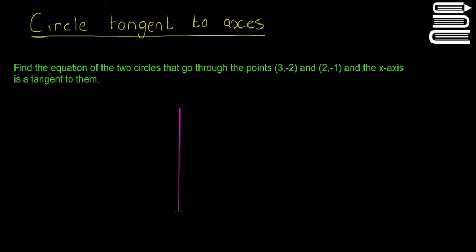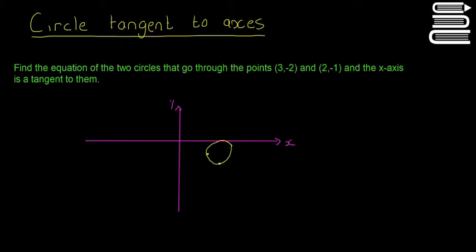We're going to draw a little sketch just so we can get our heads straight. We have our y-axis and our x-axis. We're going to have our two points: (2, −1) maybe here and (3, −2) maybe here. We're going to have two different circles that go through these points. The first one goes through those two points and is tangent to the x-axis, and the second circle is also tangent to the x-axis and goes through those two points.